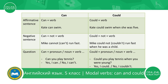When making negative sentences with could, we use could, add negative adverb not, and add the verb. For example, Mike could not run fast when he was a child. And also look at the short form of could not: couldn't. Mike couldn't run fast when he was a child.